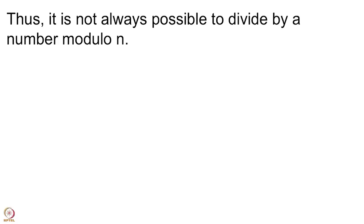Welcome back. We are talking about congruence relation and we saw that you can do addition, subtraction and multiplication while keeping the congruence relation intact. Then we asked whether you can divide by numbers, and it was not always possible. We saw the example that 4×2 is congruent to 10×2 modulo 12, but 4 and 10 are not congruent to each other. So the lesson is that it is not always possible to divide by a number modulo n.